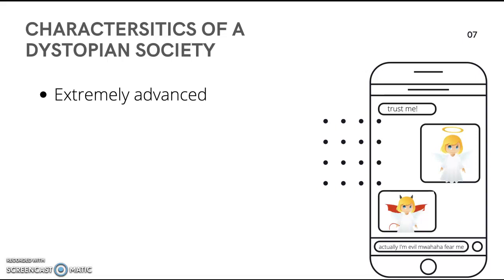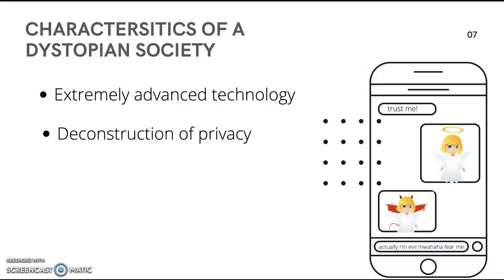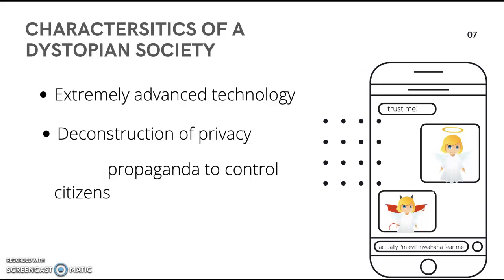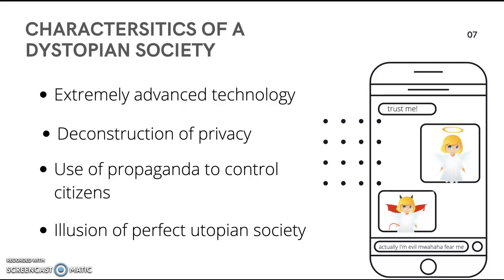What makes it a dystopian story are the characteristics the author embedded. A few dystopian characteristics include extremely advanced technology, which are the precogs. There is also the deconstruction of privacy, since citizens are perceived to be under constant surveillance and the precogs invade the privacy of would-be criminals in order to predict their future crimes. There is also use of propaganda to control citizens. The one I am going to go more in depth about is that the society is an illusion of a perfect utopian society.